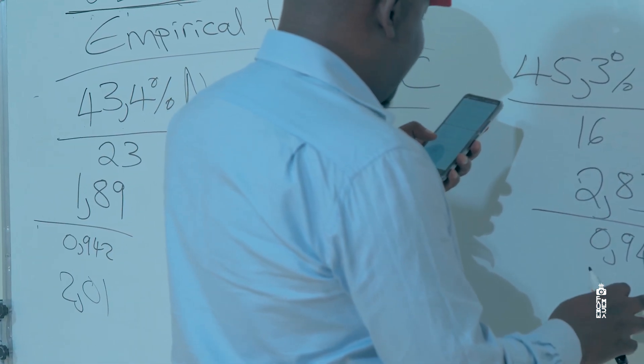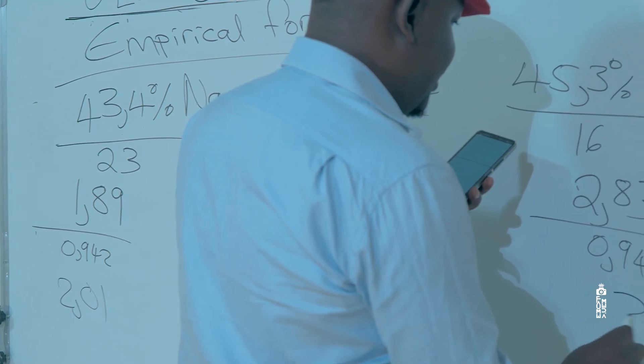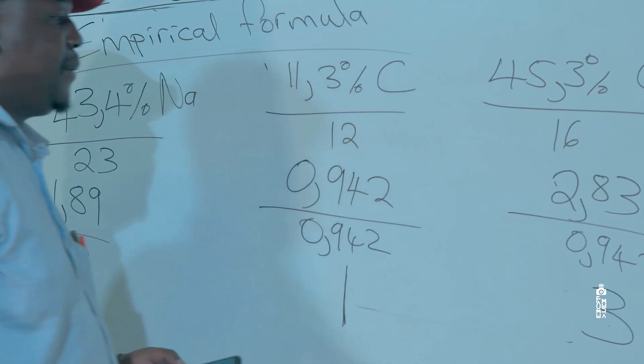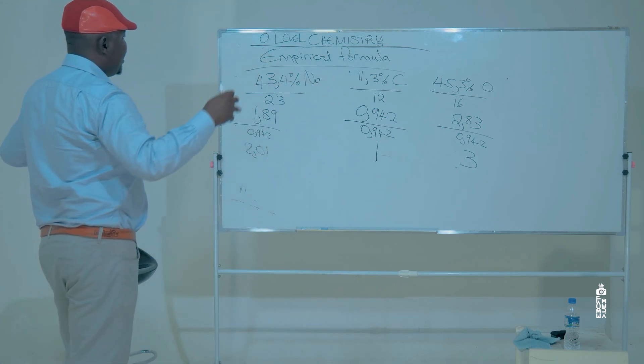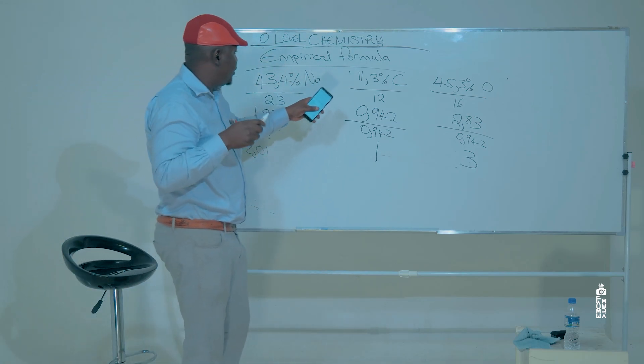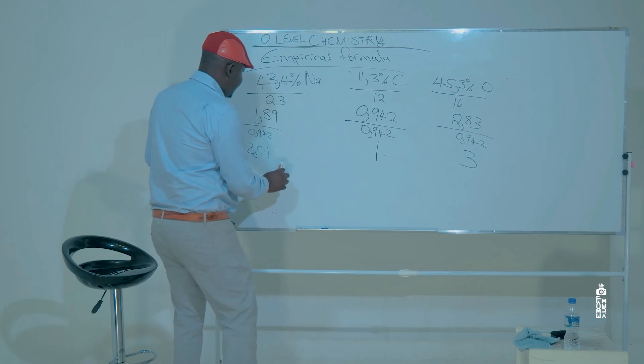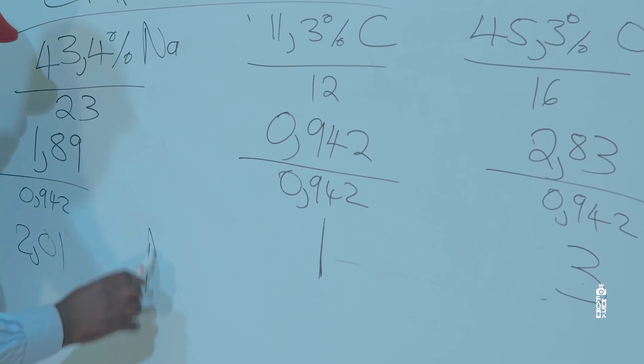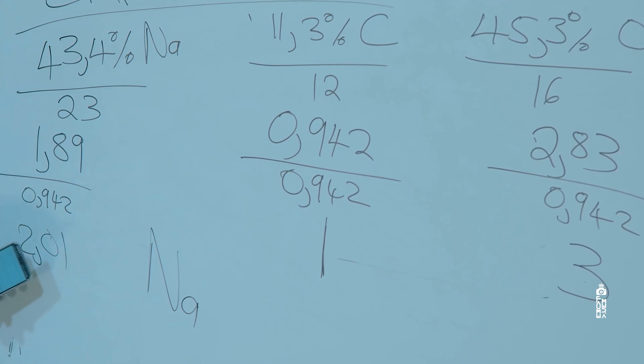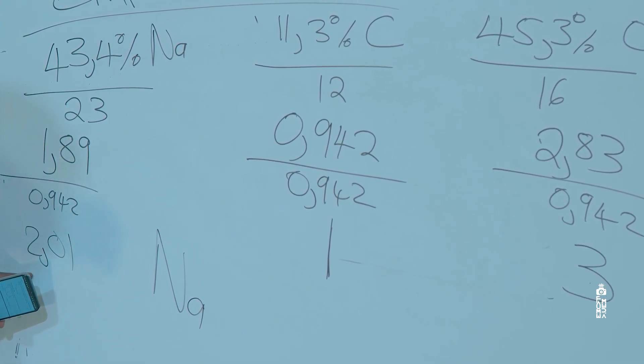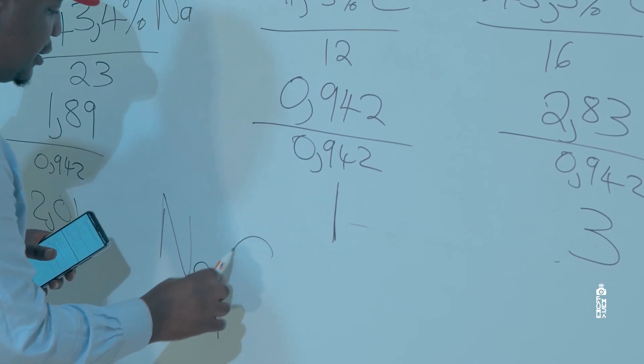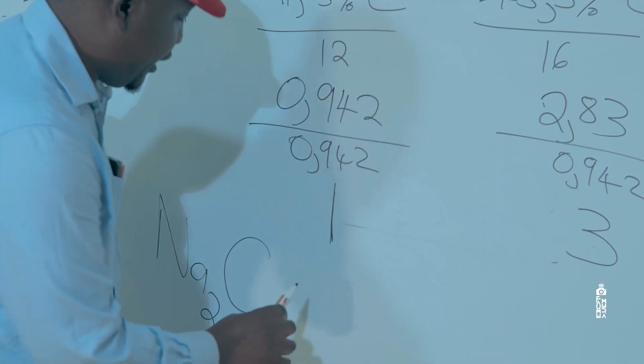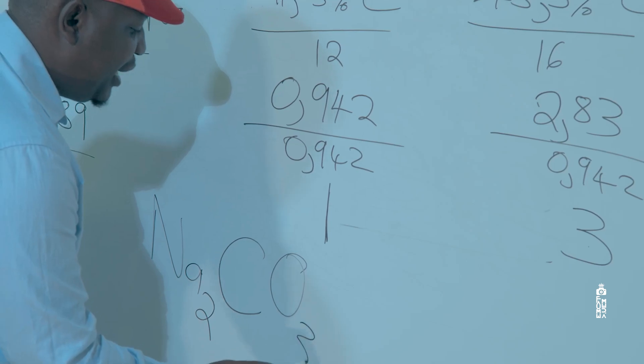So what it means is that the ratios for these elements in this particular compound are going to be as follows: we have sodium, then we round off this number to the nearest whole number, so it's going to be Na2, and then we get CO3. So the empirical formula is Na2CO3, and this is known as sodium carbonate.